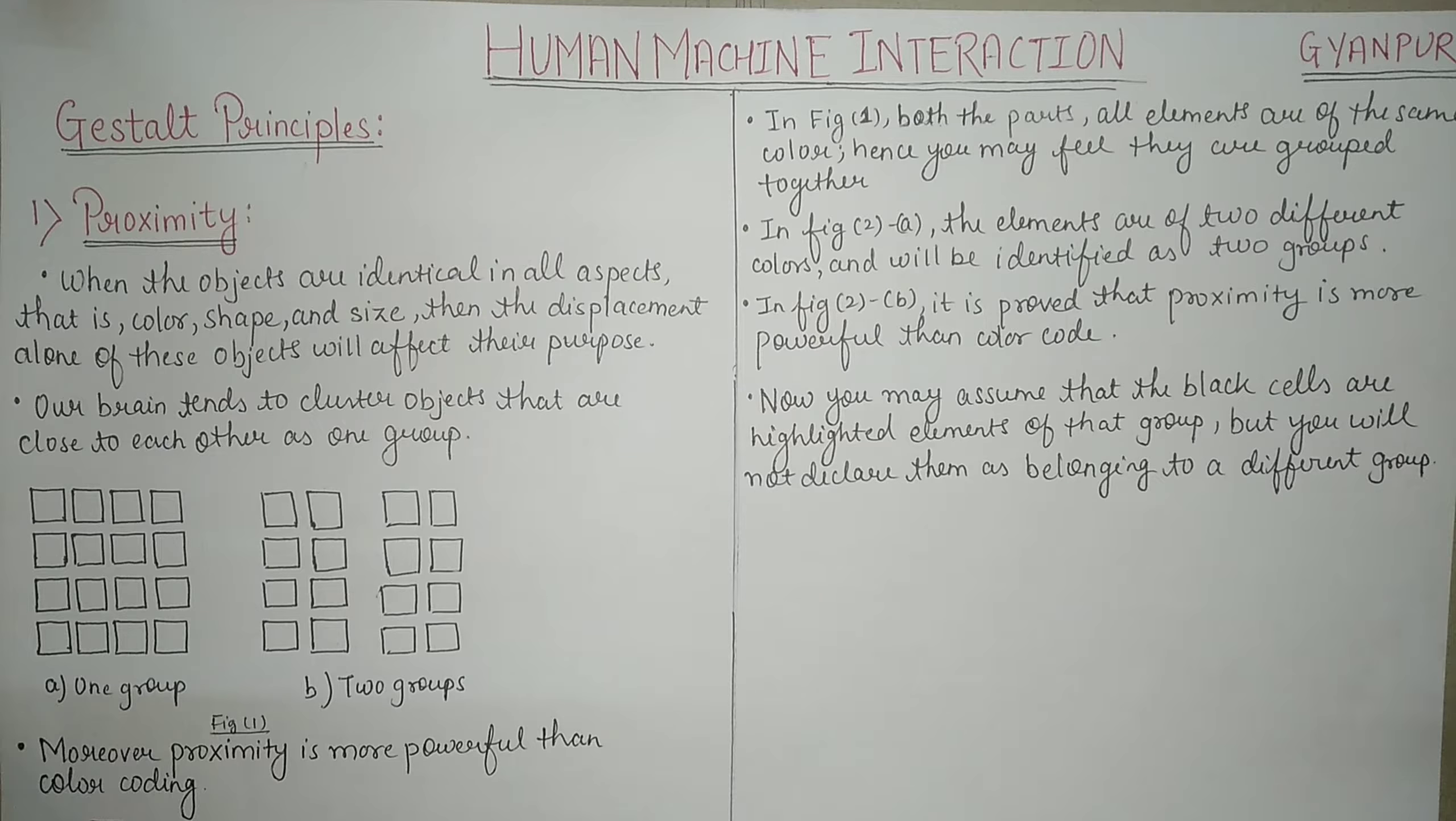Proximity means the closeness or the space or the distance between two objects which may be different but they are same for the user or they are grouped together for the user. Let's see how it happens.